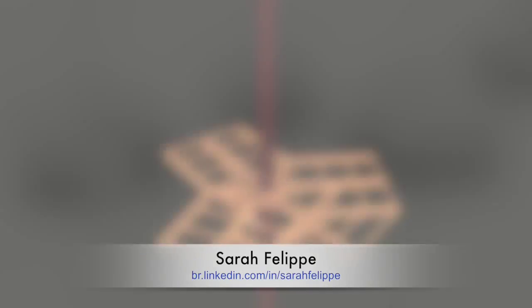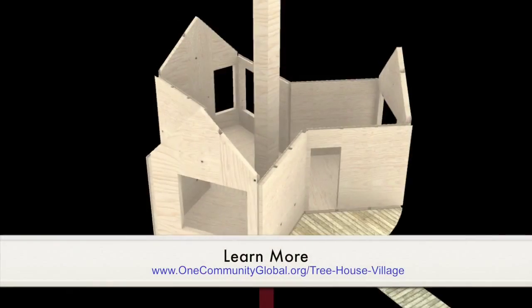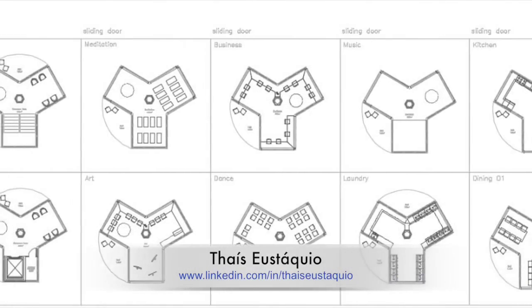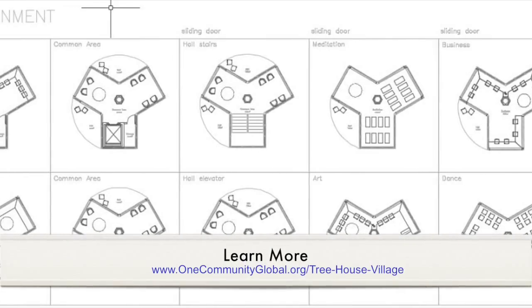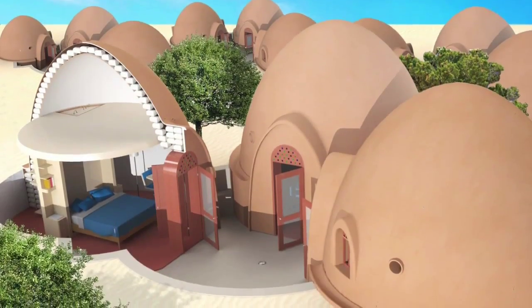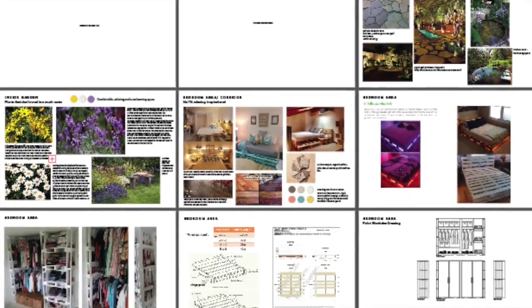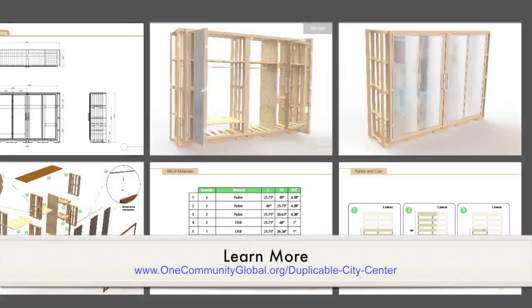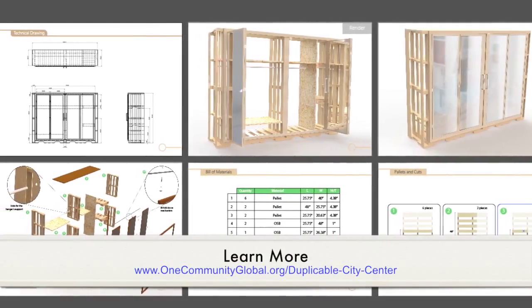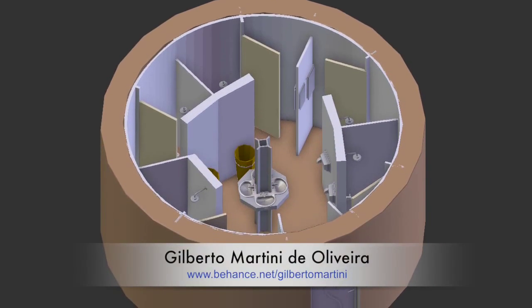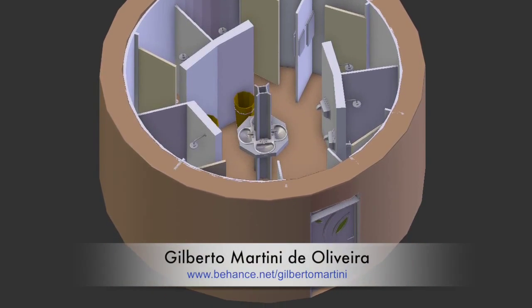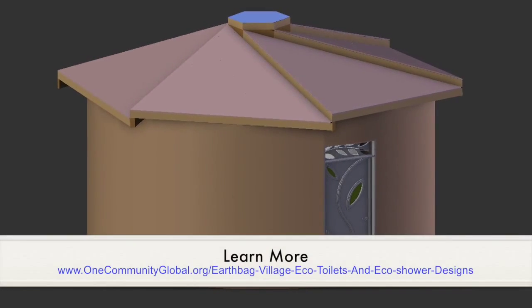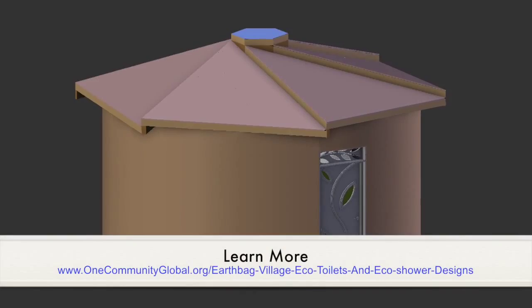Sarah, another member of the architecture and planning intern team, created 3D models of the construction design for the treehouse village Pod 7, as you can see here. Dice from the architecture and planning intern team continued updating the floor plans of the treehouse village and brought them to 100% completion. Gabriel, an industrial design student on our graphic design intern team, updated the ambiance in his models of the earthbank village and then created additional renders. He also continued creating models and components lists of the Duplo City Center's pallet furniture with Flavia. Gilberto, from the graphic design intern team, continued his 3D modeling project for a complete realistic walkthrough of the earthbag village units — this week he added the communal bathroom.